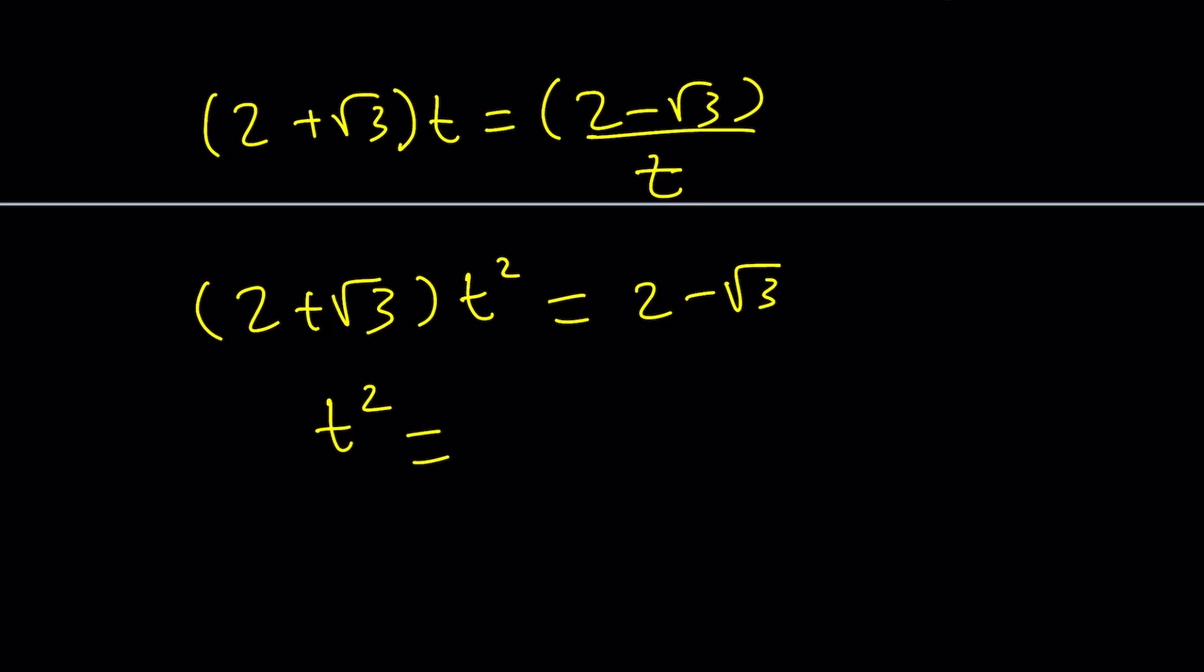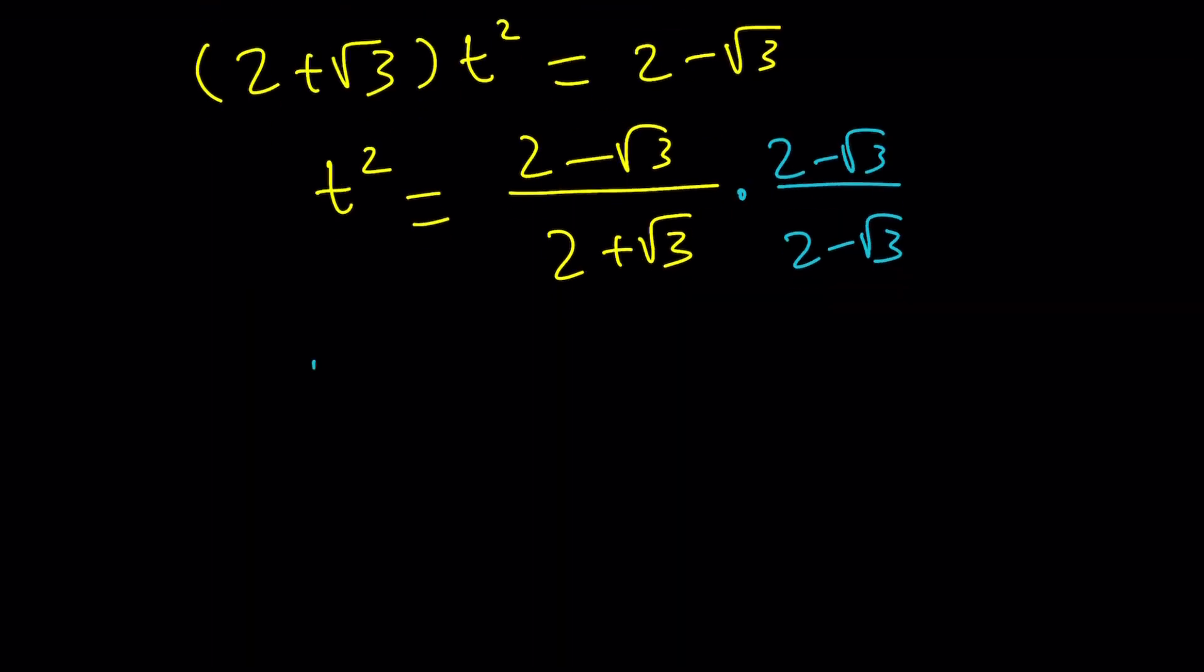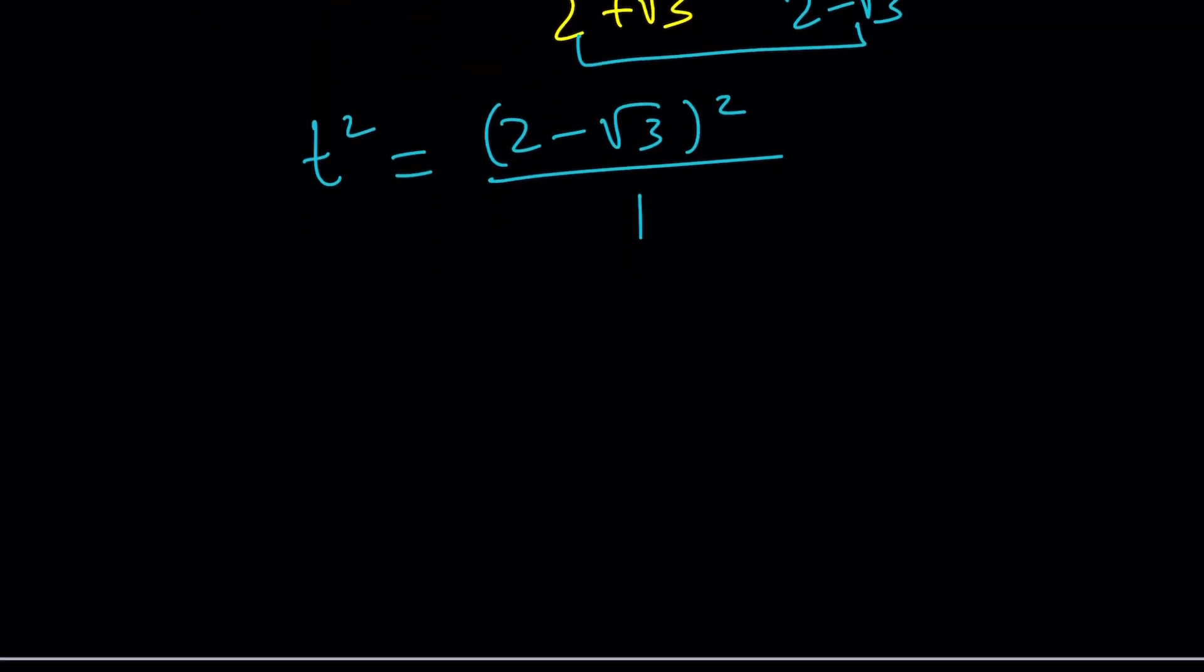Let's call this t, so e to the ix is t. Then we can cross-multiply. That's going to give us 2 plus root 3 times t squared equals 2 minus root 3. If you rationalize the denominator, the top is going to be 2 minus root 3 squared and the bottom is just 1. We can square root both sides, giving us two solutions: t equals 2 minus root 3, and t equals root 3 minus 2.